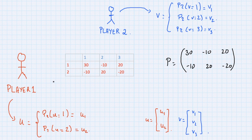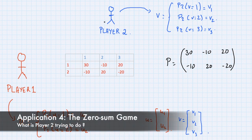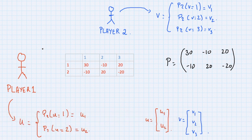There's a min-max situation going on here: player one is trying to maximize the expected payoff while player two is trying to minimize it. Let's first look at the problem from player two's perspective. Player two would like to minimize the expected payoff, which can be expressed as the inner product u^T P v.